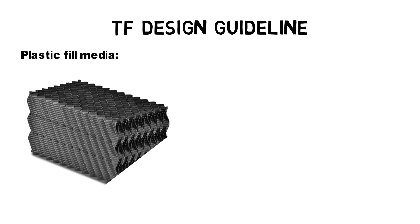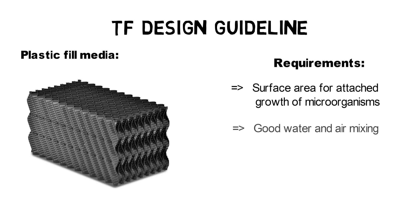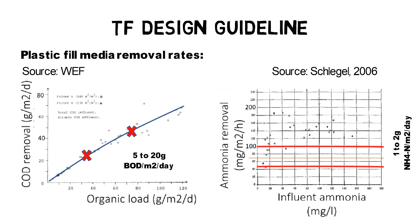The plastic-fill media layers must provide enough surface area for attached growth of microorganisms, ensure good water and air mixing, as well as withstand structural loadings. Typical removal rates for trickling filters are between 5 and 20 grams BOD per square meter of plastic-fill media surface area per day, and 1 to 2 grams of ammonia per square meter per day. Plastic-fill media is available in different types with various specific surface areas — the higher the surface area, the more microorganisms are available and the better the performance of the trickling filter, but at the same time the higher the risk of clogging.